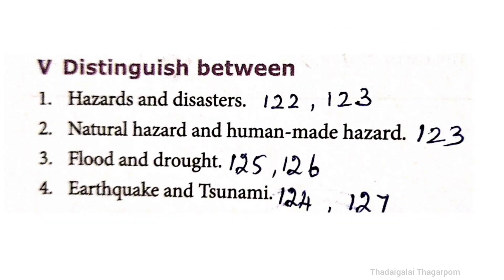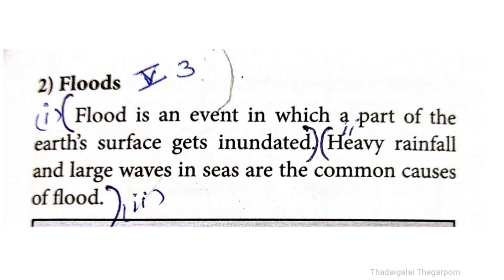Third distinction: Flood and drought. The answer is on pages 125 and 126. Flood is an event in which a part of the earth's surface gets inundated. Heavy rainfall and large waves in seas are the common causes of flood.